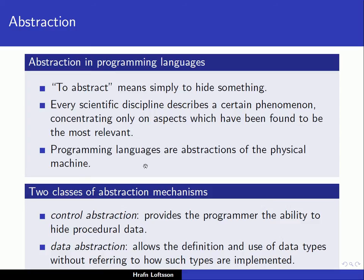Programming languages are just abstractions of the physical machine. We are modeling the machine using a particular language and abstracting away from the very detail of the underlying machine. In general, we can say that we have two classes of abstraction mechanisms. The first is control abstraction, which provides the programmer the ability to hide procedural data — we make procedures or functions and hide the functionality inside them. The second class is data abstraction, which allows us to define and use data types without referring to how such types are implemented, known as abstract data types.